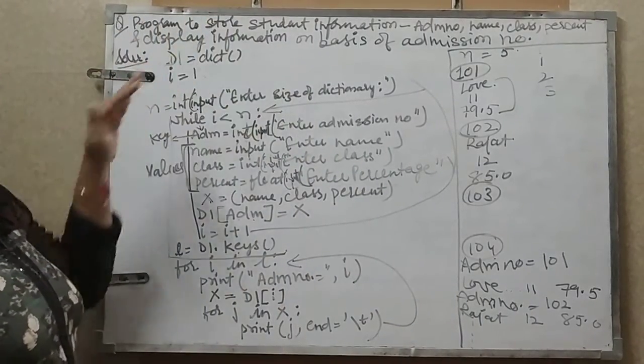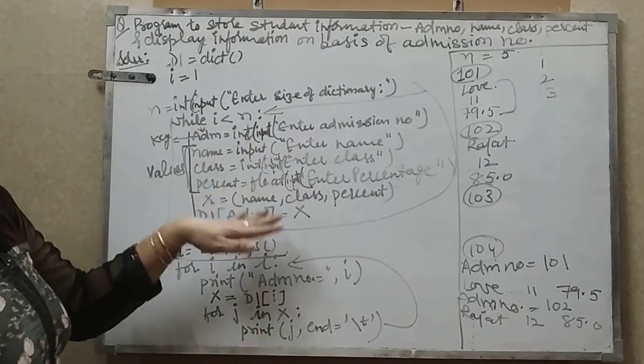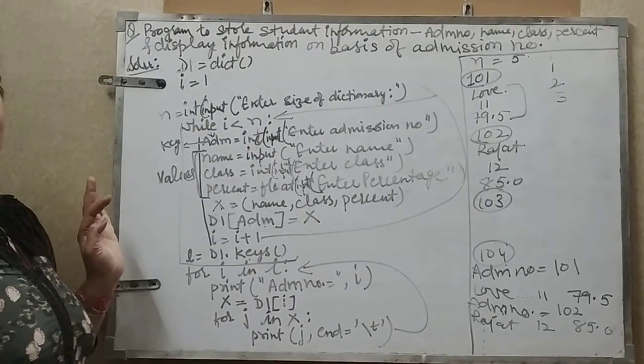So a dictionary can contain one key with more than one values, and dictionary can also access the values on the basis of its key. Thank you.